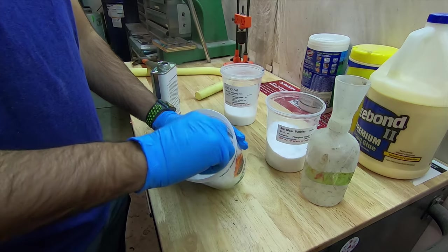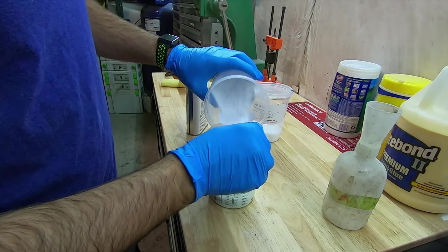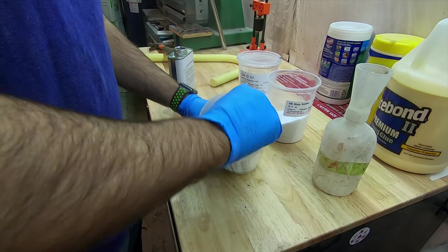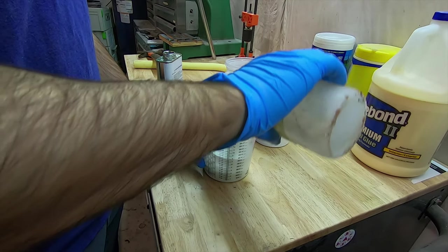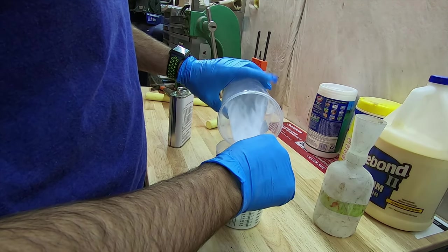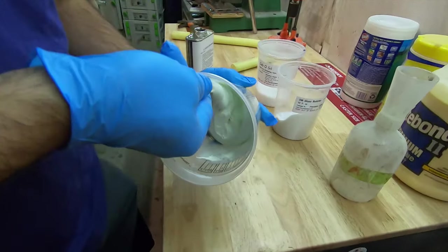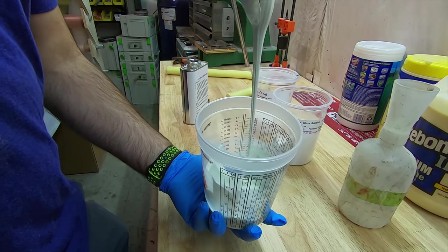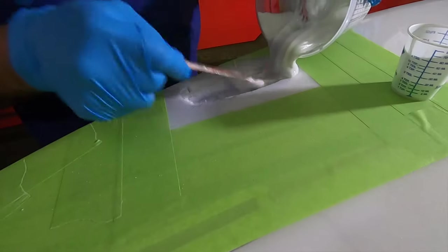Here we're mixing up the putty using three ounces of resin and starting with three ounces of bubbles by volume. Ultimately we mixed in about nine ounces of bubbles and make sure you add some MEKP catalyst to the mixture so it'll harden up, about one percent MEKP.